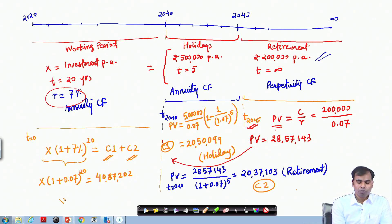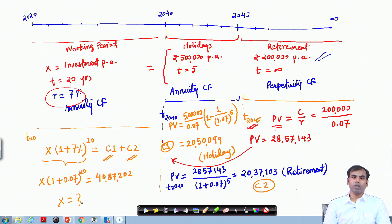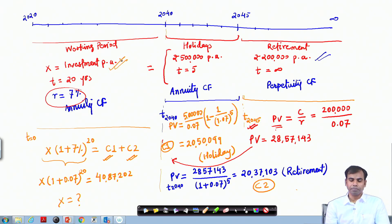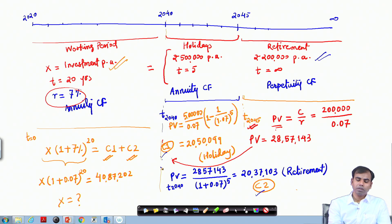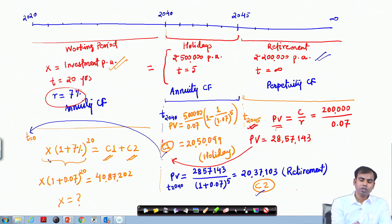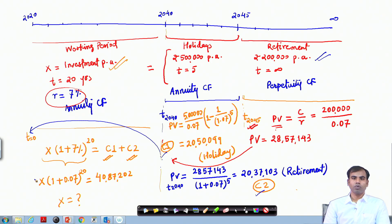If you equate this, you should be able to find the value of X — the amount to be invested per annum over the 20-year working period to achieve the financial plan. An alternative approach is to bring all of C1 and C2 back to present value today and use the annuity formula C by R multiplied by 1 minus 1 divided by 1 plus R to the power 20 years for discounting.